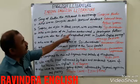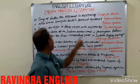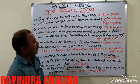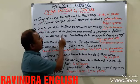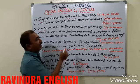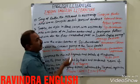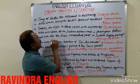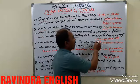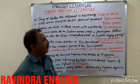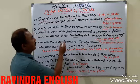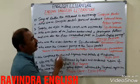Henry Derozio was born of an Indian mother and a Portuguese father, and was also the first celebrated poet in Indian English poetry. He was born in India with an Indian mother and a Portuguese father — the first famous poet in Indian English poetry.